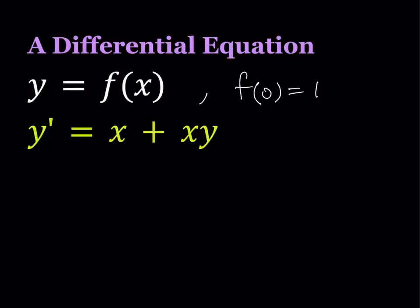We are given an initial condition here, f of 0 equals 1, that is going to allow us to find or to fine-tune the answer at the end. So, first of all, I'm going to write y prime as dy over dx, which indicates that I'm differentiating y with respect to x.